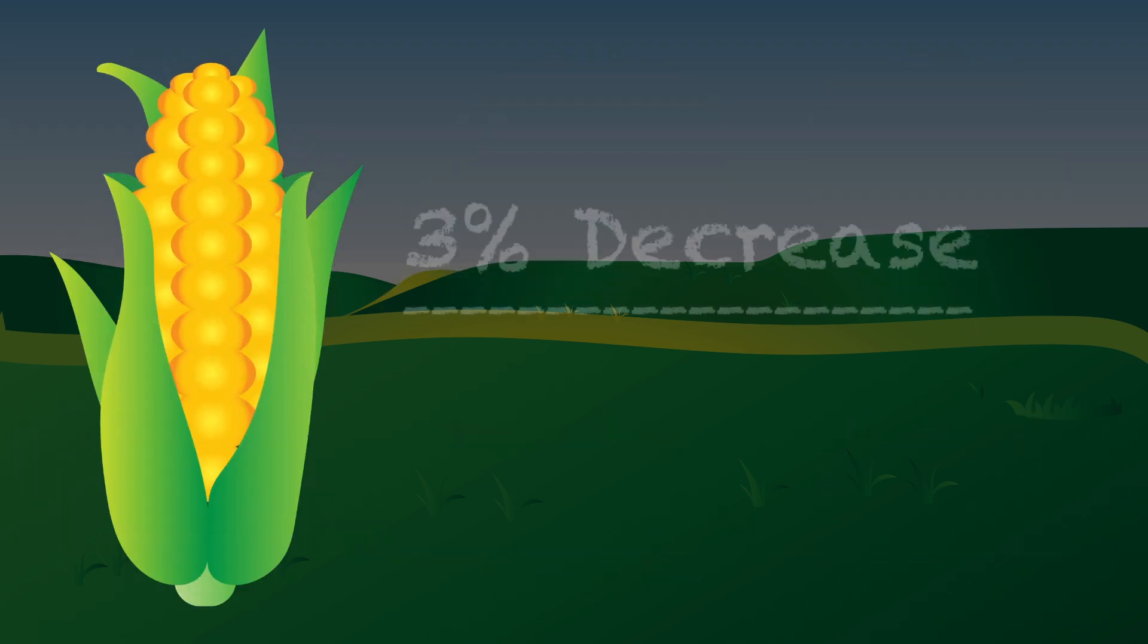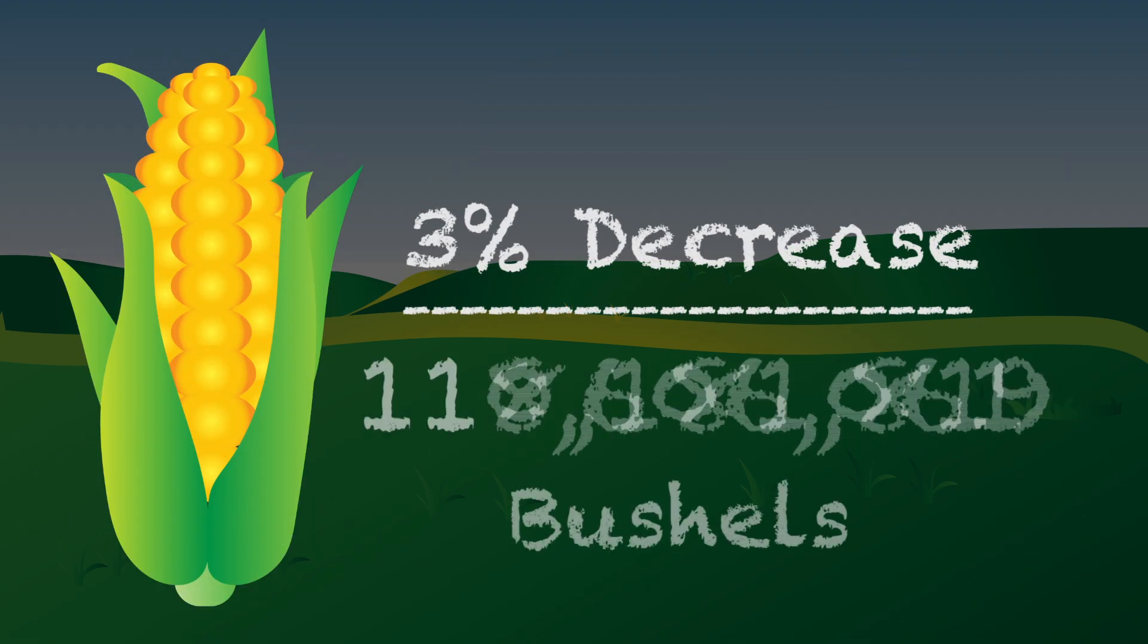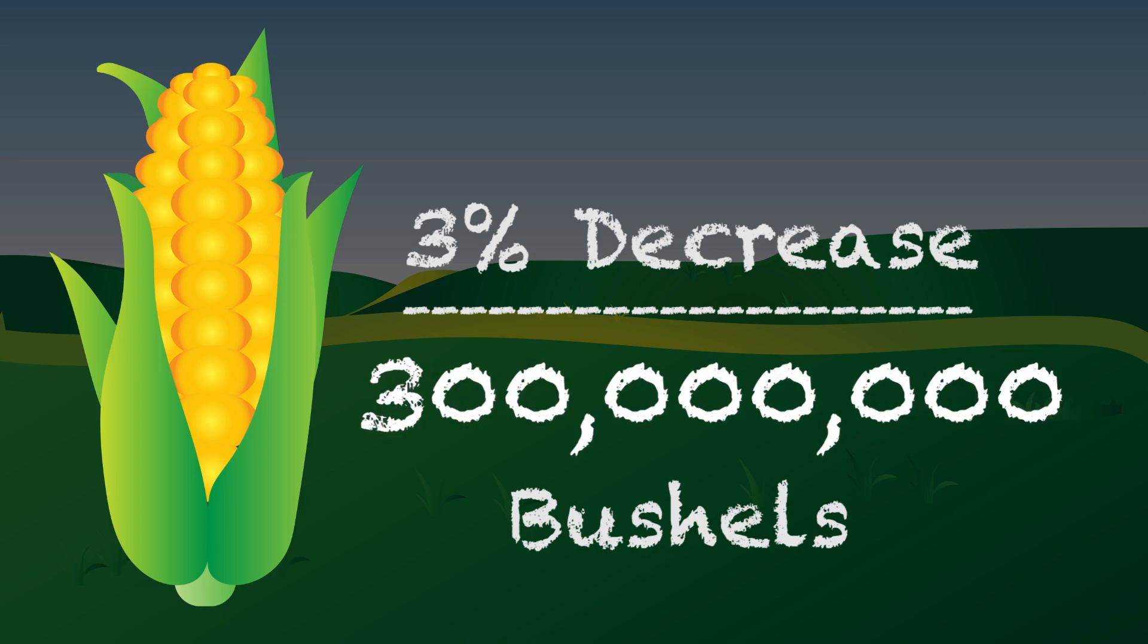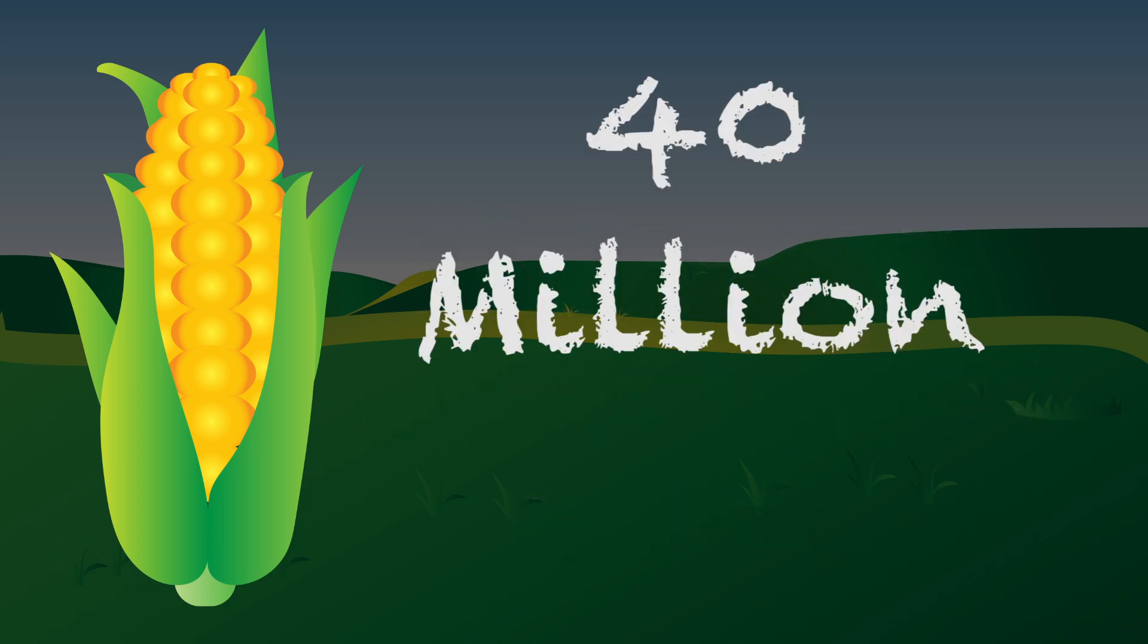For corn alone, it could mean a decrease of 3% in yield, or more than 300 million bushels. That's enough corn to feed 40 million people.